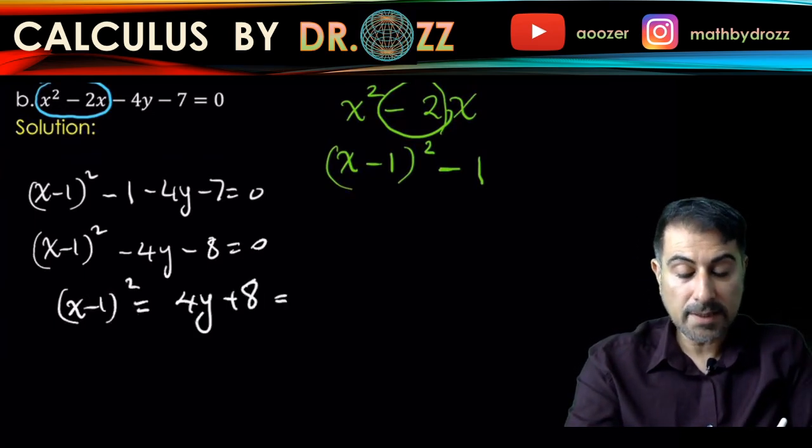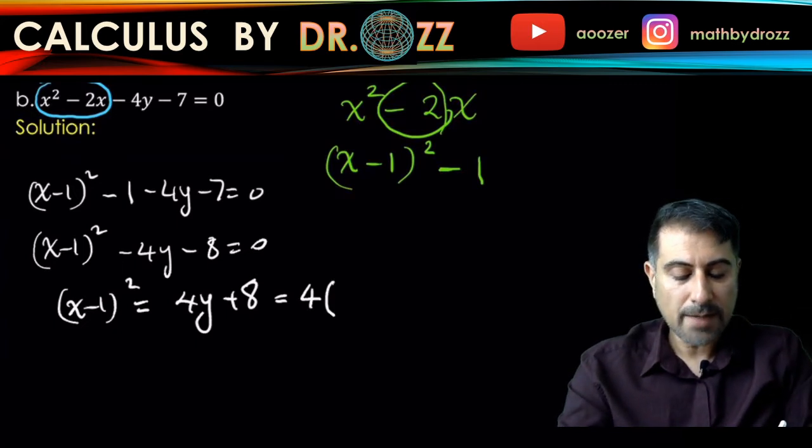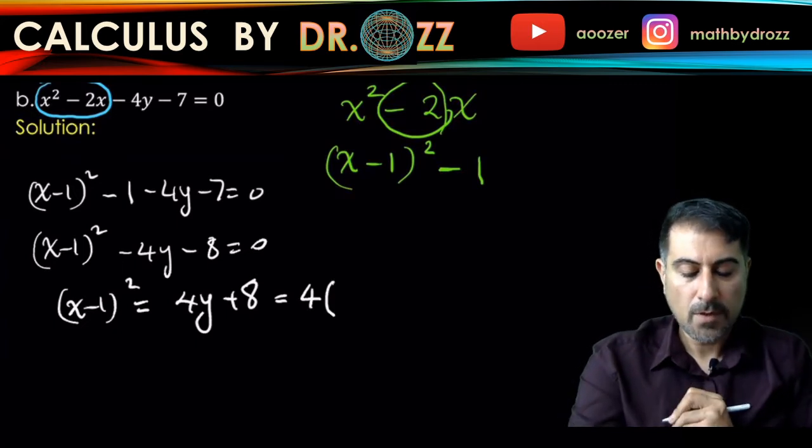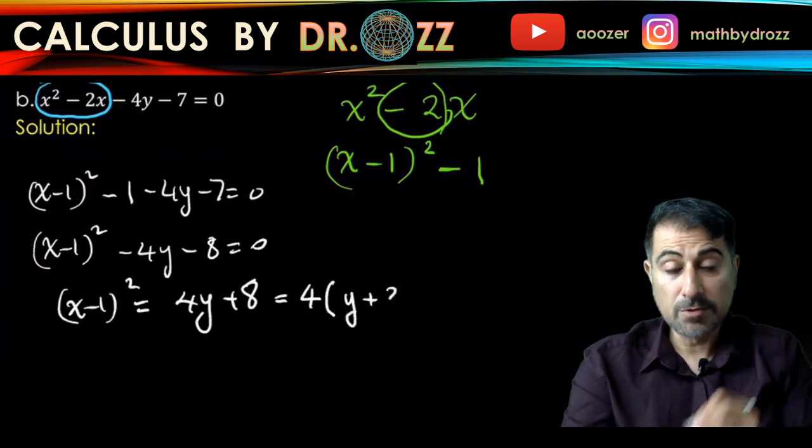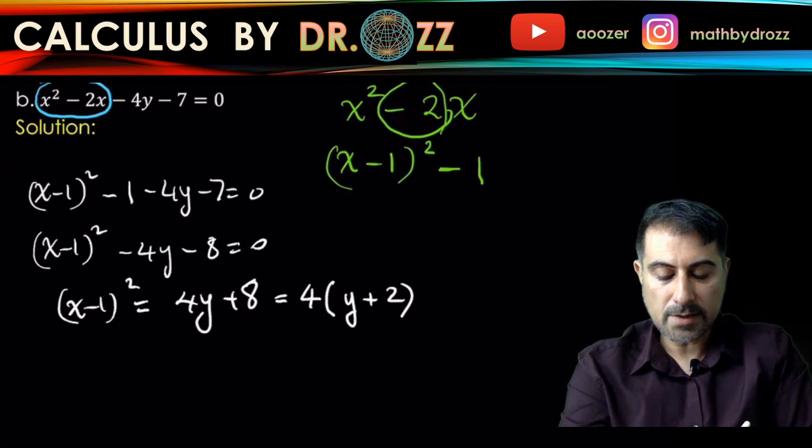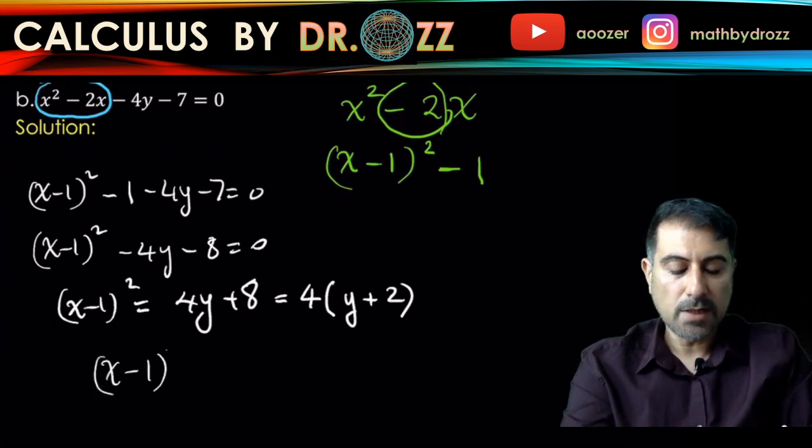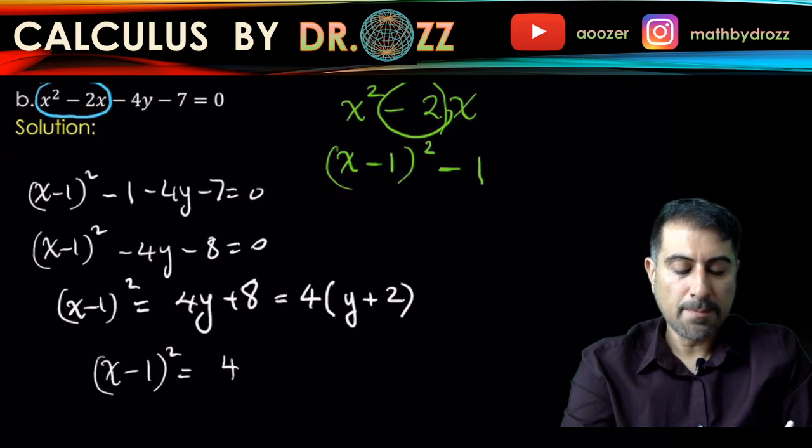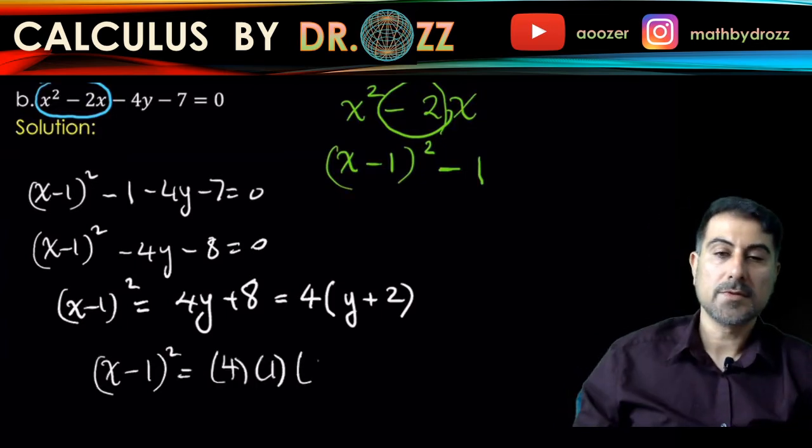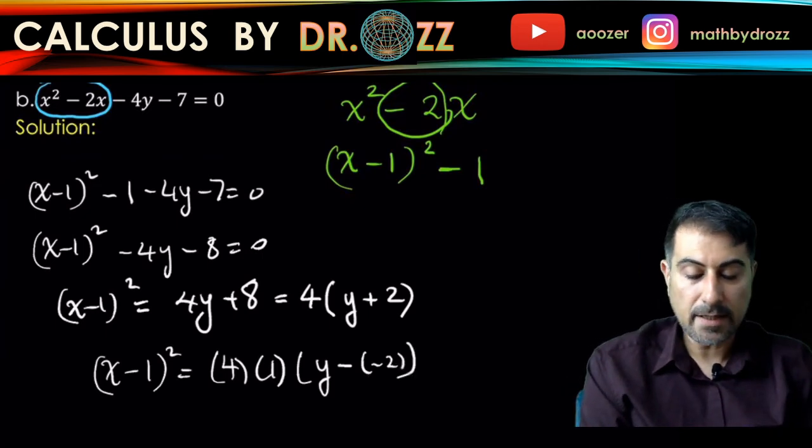Remember that I have to factor 4 out on the right-hand side because that's what the standard form requires, so this is 4 times y plus 2. I'm going to rewrite this with the form we had earlier: x minus 1 quantity squared equals 4 times 1 times y minus negative 2.